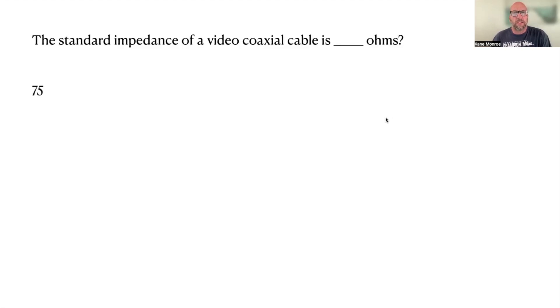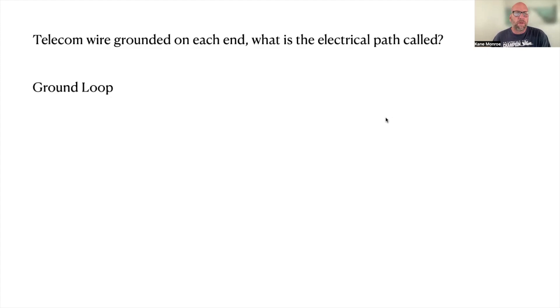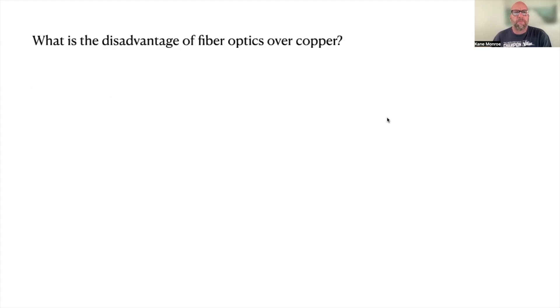Telecom wire grounded on each end, what is the electrical path called? It's called the ground loop when they're grounded on each end. Remember that one. What is the disadvantage of fiber optics over copper? And the answer is the cost of it. So there again guys not in the code book but on tests. What is the measurement of the amount of signal for fiber optics? And that's bandwidth.